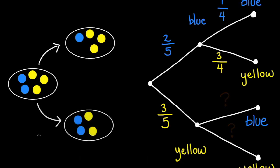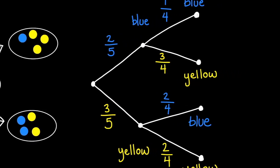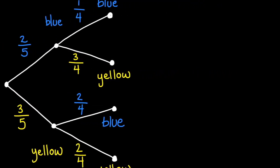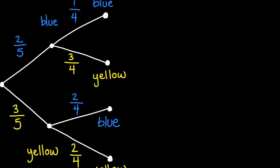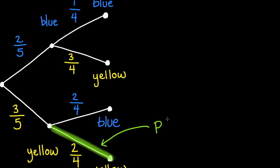If a yellow marble is selected first, you are left with two yellow and two blue marbles. There is now a two-fourths chance of drawing a blue marble and a two-fourths chance of drawing a yellow marble. What we have drawn here is called a tree diagram. Tree diagrams help us to visualize our sample space and reason out probabilities. The probability assigned to the second branch denotes the conditional probability given that the first happened.